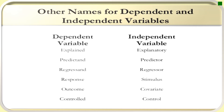For the independent variable, other words used to substitute it are: explanatory, predictor, regressant, stimulus, covariate, and control. To familiarize yourselves with these words, use them in your future researches. Maybe in your future assignment, I will let you use the other words used to substitute dependent variable or independent variable.